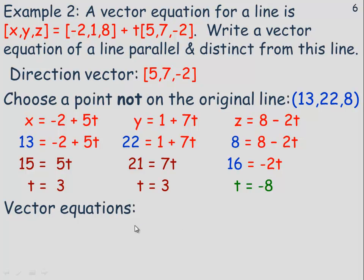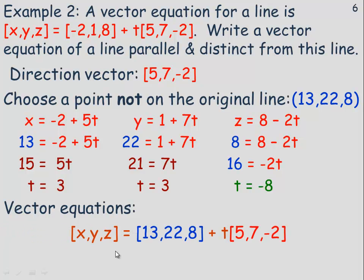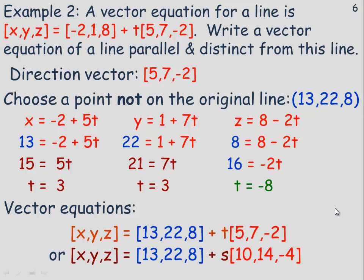So a possible vector equation for the parallel and distinct line is: [x, y, z] = [13, 22, 8] + t[5, 7, negative 2]. The direction vector guarantees it's parallel to the original line, and the point (13, 22, 8) guarantees it's distinct. If you use a different multiple of the direction vector like (10, 14, negative 4), that's another valid vector equation — just use a different parameter name.